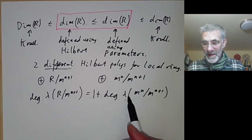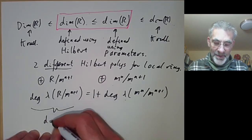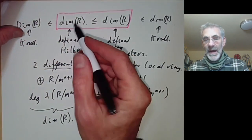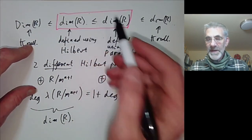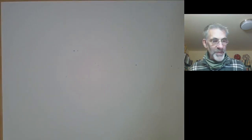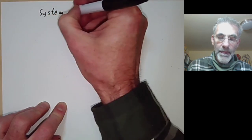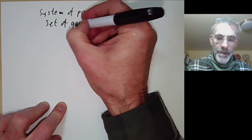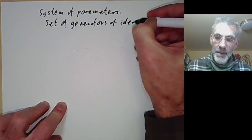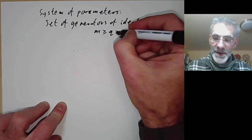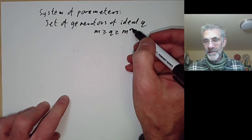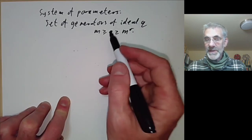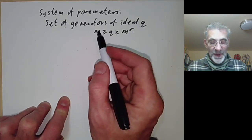So which of these degrees is the dimension of R? The degree of lambda of R over M to the n plus 1 is the dimension of the local ring R. Now let's show how to prove this inequality. A system of parameters is a set of generators of an ideal q with M contained in q contained in M to the r for some positive integer r. Last lecture I gave an example of an ideal q with a system of parameters that had fewer generators than the ideal M.